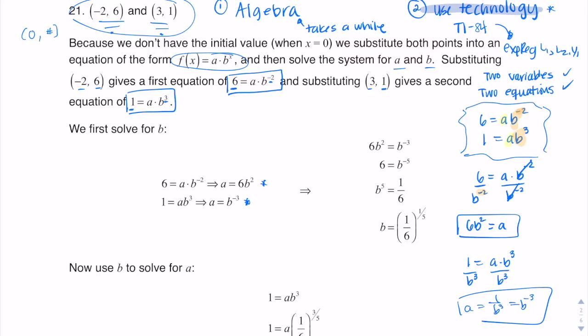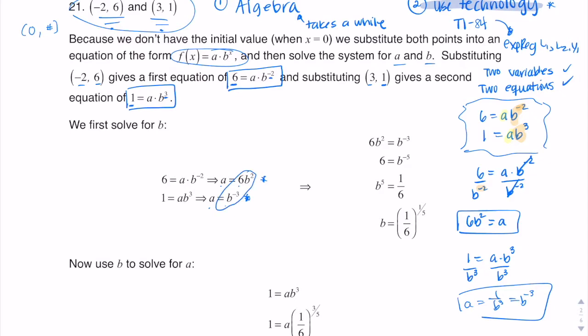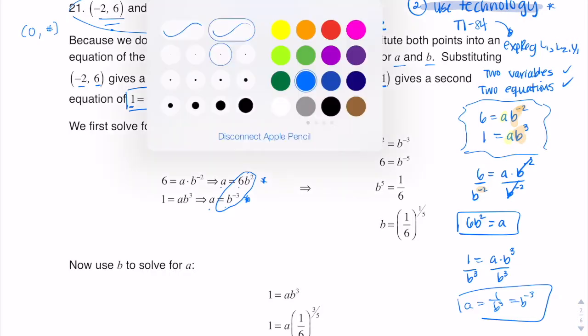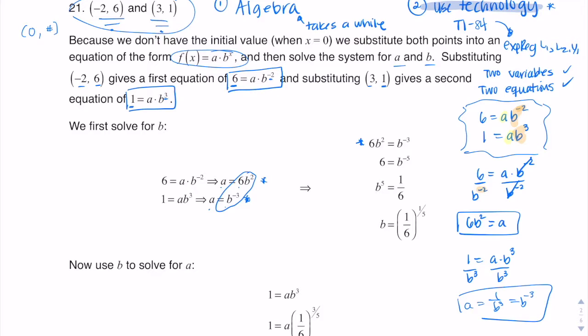So I have two equations now where a is solved for. If a equals six b squared, and a also equals b to the negative three, then through transitivity these two expressions need to equal each other. So I decided to solve this algebraically. I have six b squared equaling b to the negative three. You have a couple of options here — you can divide both sides by b squared, or divide both sides by b to the negative three. I'm going to opt to divide both sides by b squared, to get the letters on one side and the numbers on the other.